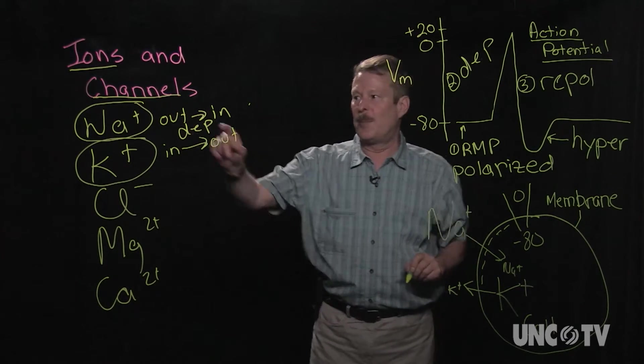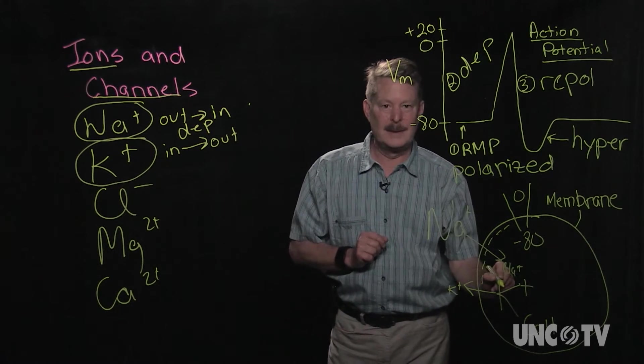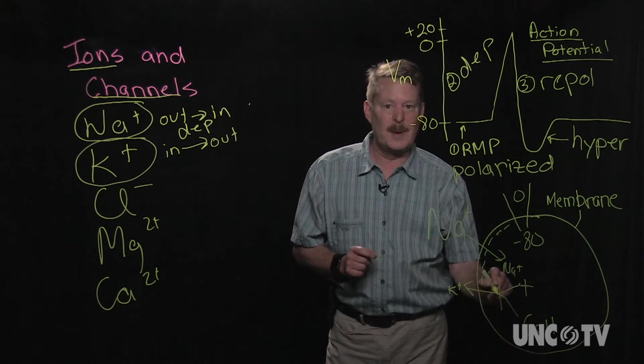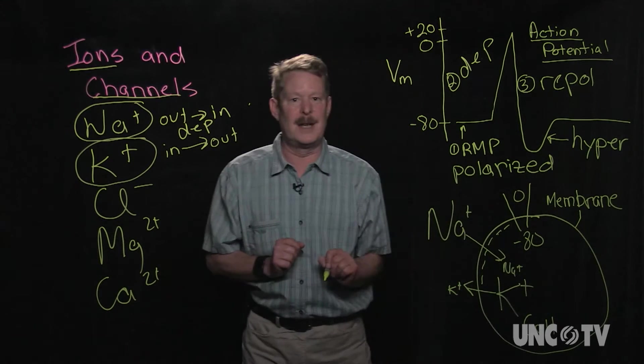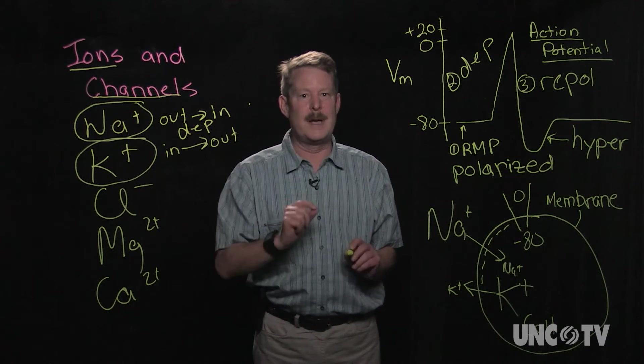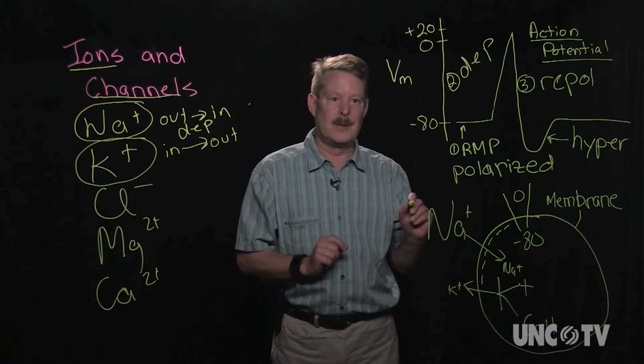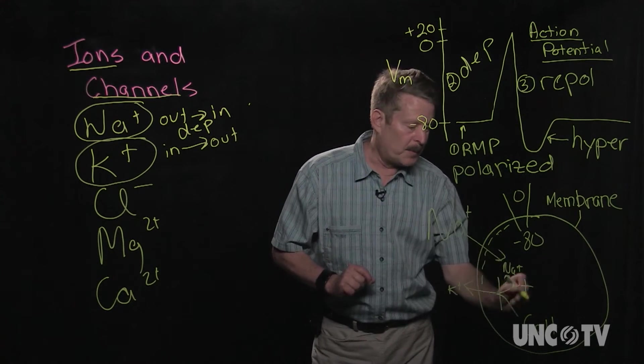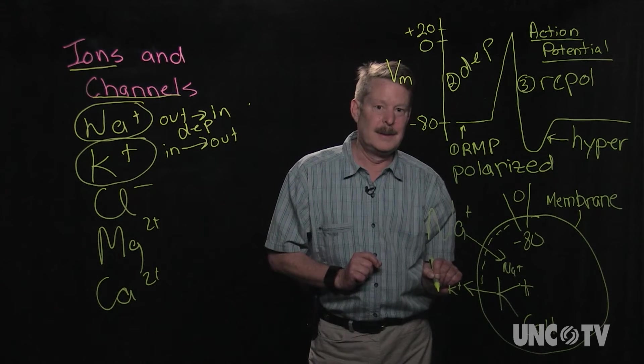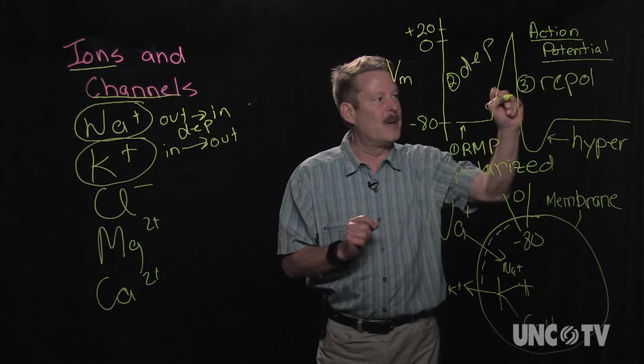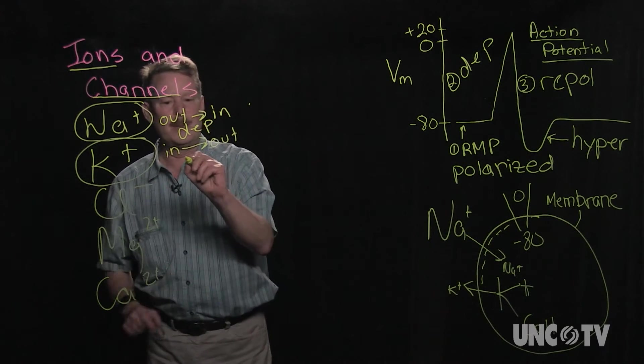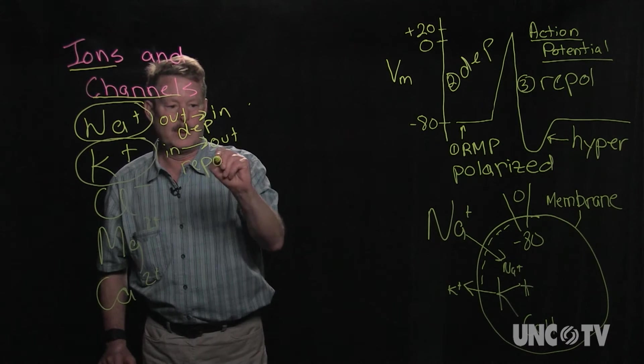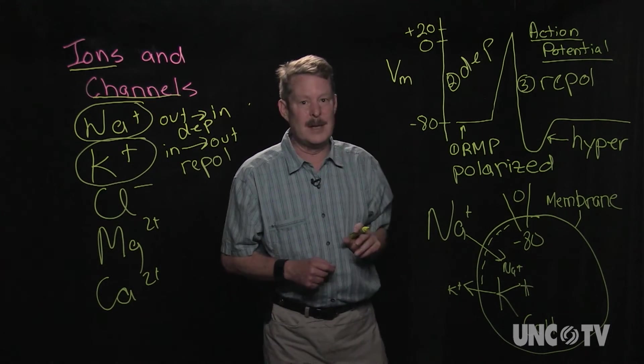On the other hand, if a potassium channel opens, potassium is going to go out of the cell. We're going to remove a positive charge from inside the cell. Which way is the membrane potential going to go? Is it going to go more positive or more negative? If we remove a positive charge from inside the cell, the membrane potential is going to be more negative. So potassium, when potassium channels open, it's going to be responsible for repolarization.